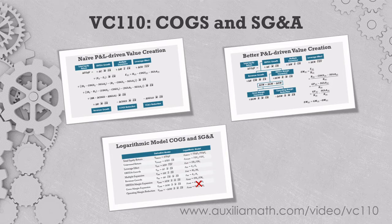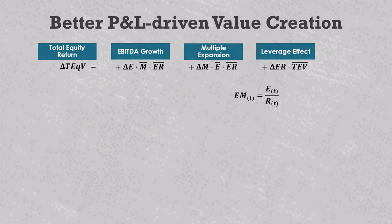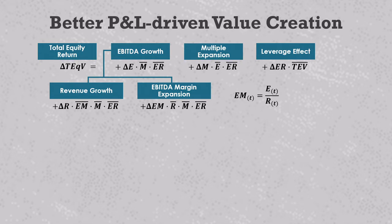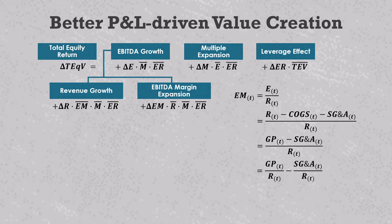You may have guessed that the right way to do this is to bring the margins into the model. We know that the EBITDA margin is equal to EBITDA divided by revenue, and this allows us to replace EBITDA in our formulas with the product of revenue and EBITDA margin. When we run this through the calculus described in VC104, EBITDA growth splits up into two new value drivers: one for revenue growth that includes the change in revenue and the average holding period EBITDA margin, and another for EBITDA margin expansion that includes the change in the EBITDA margin and the average holding period revenue. This is the correct spot to introduce the fact that EBITDA equals revenue minus COGS minus SG&A. We plug that into the EBITDA margin formula, and in the numerator, R minus COGS equals the gross profit, so we can make that substitution.